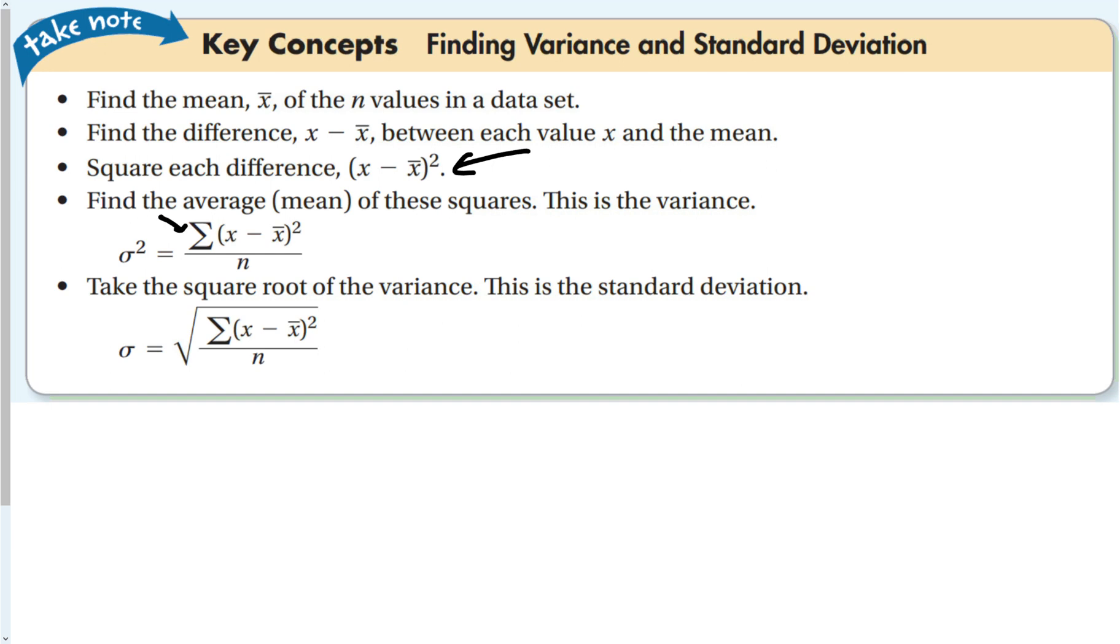This symbol means add them all up, it's called sigma. We add up all those numbers and take the average to get the variance. Then, because that's sigma squared, we take the square root to find the standard deviation.